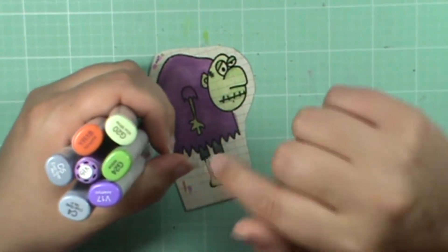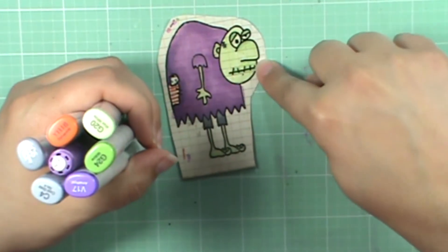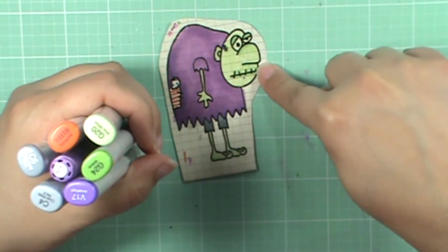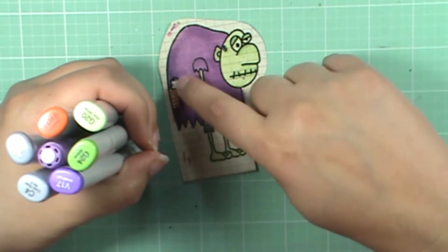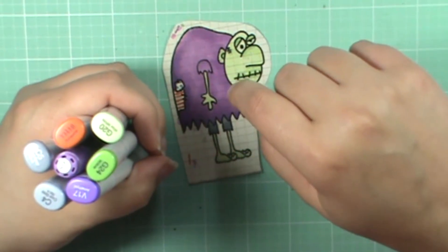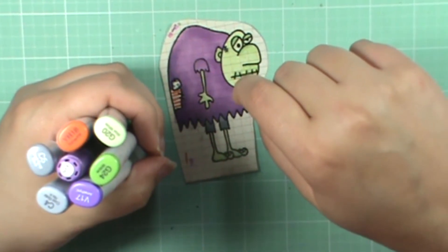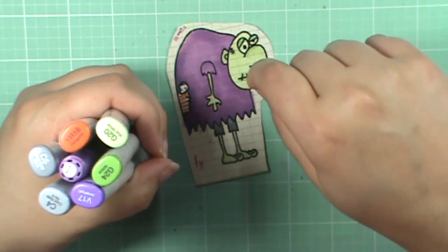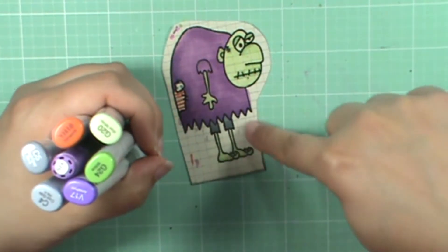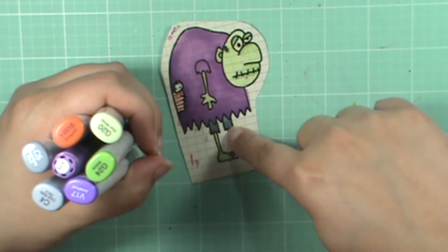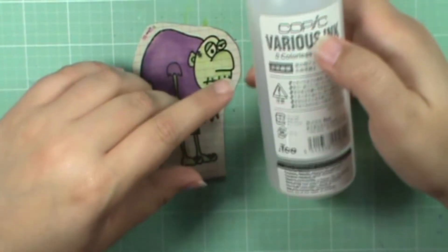Because I know I'll get asked. So for his face, I used G20 and G24. For the little bit of orange in it, it's YR18. For the purple, it is V15 and V17. And then the gray is C4 and C5.